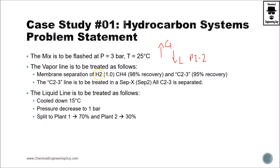Then the vapor line is going to be treated. We need to remove hydrogen, methane, and the middle volatile material with at least 95% recovery, because we are going to feed that into CEPX. We don't know what CEPX is — it's the model we will be using, CEP2. The main idea is to separate C2 and C3 from all the other gases.